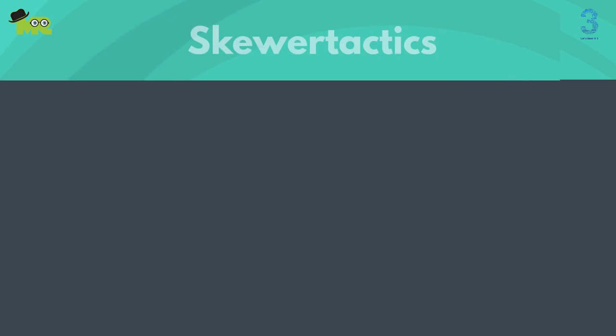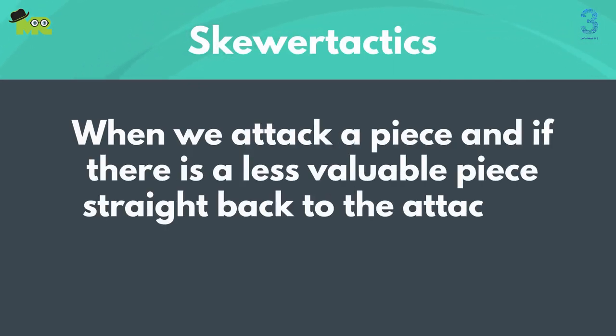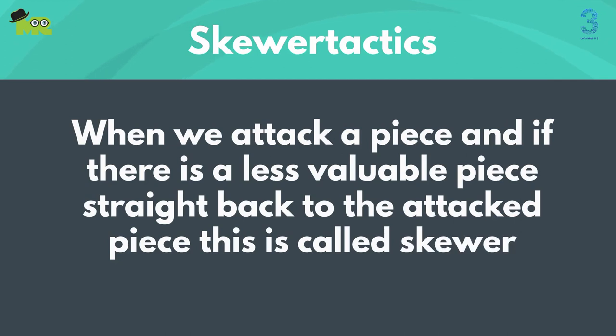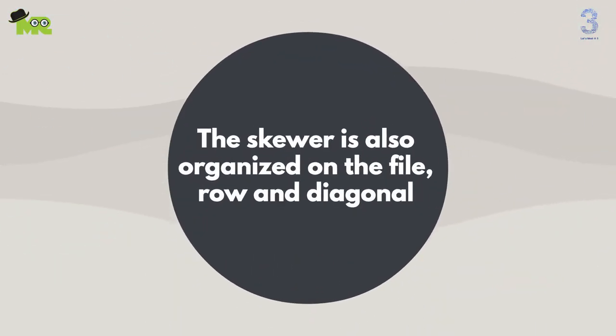Skewer tactics. When we attack a piece, and there is a less valuable piece behind the attacked piece, this is called a skewer. The skewer is also organized on the file, row, and diagonal.